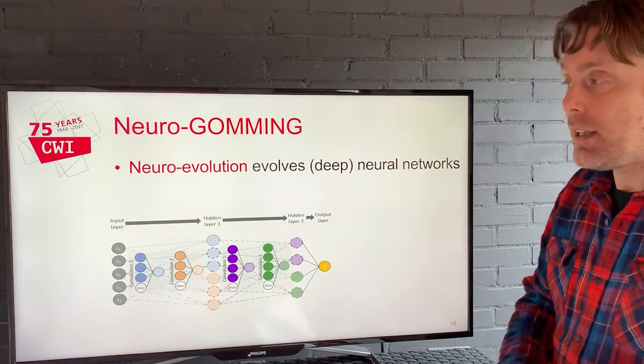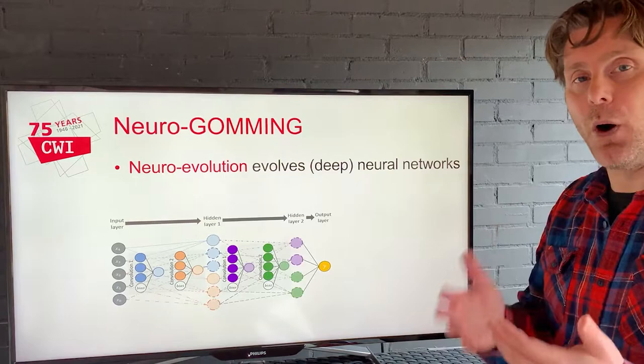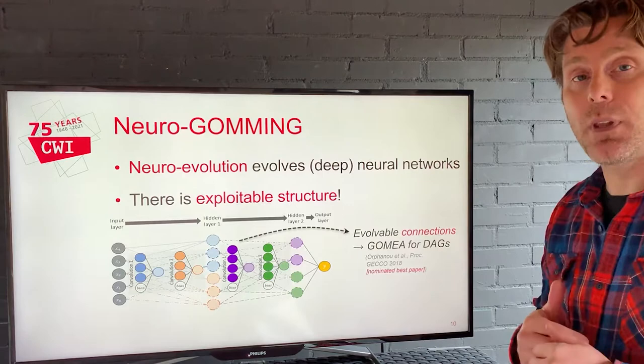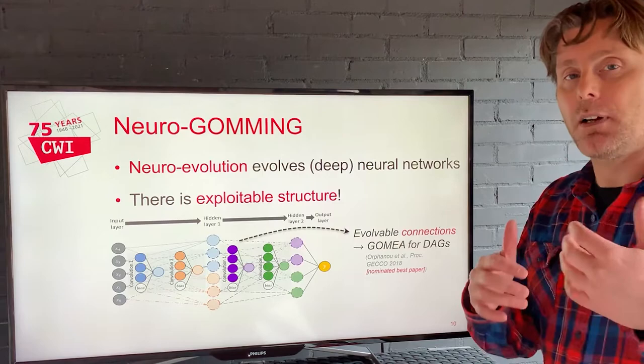That now opens the door to completely new possibilities, including ways to improve machine learning techniques. Deep neural networks and deep learning are very popular nowadays, and neural evolution aims to evolve neural networks — that's been around for a long time, but not so much in deep learning yet. When we do that, there are lots of exploitable structures. These deep neural networks are very big, but they're not randomly connected — there's a reason why things are connected the way they are, and why certain parts of the network work the same way.